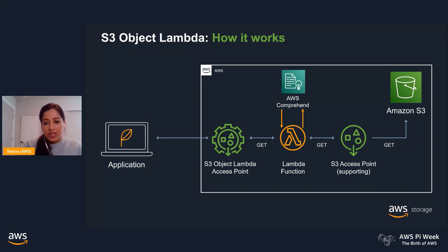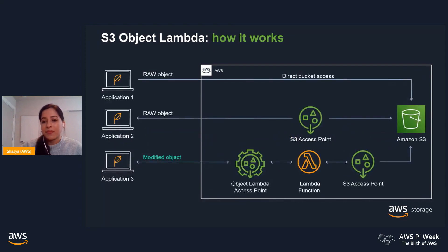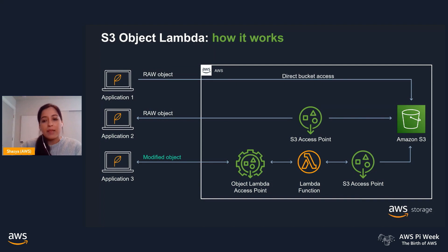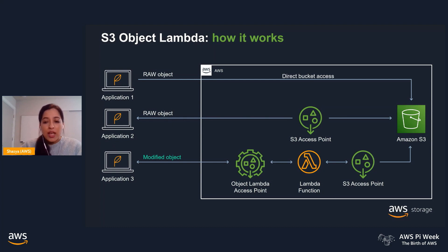By using pre-built Lambda functions and AWS's existing services, you can set up solutions that are managed end-to-end. In multi-tenant S3 environments, we're expanding the many ways to access your objects. You can access data directly to receive an S3 object in its native form, or via an S3 access point to apply granular security and access controls while still receiving the native object. Now you can access your bucket through an Object Lambda access point, which in addition to applying granular access controls will also format the object as you specify before it comes back to you.